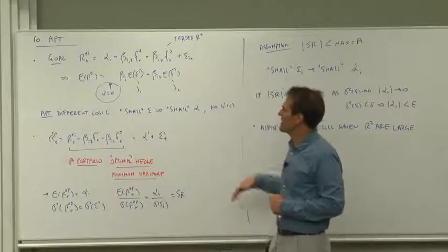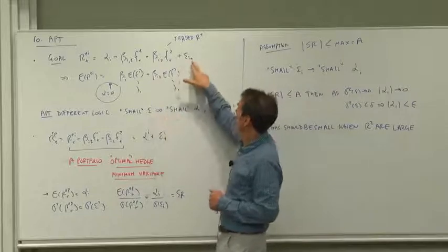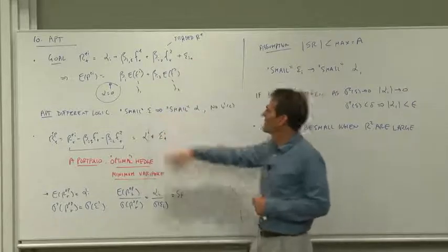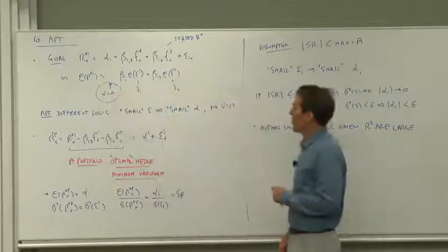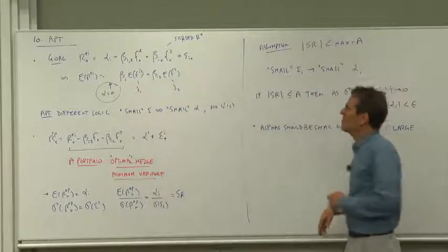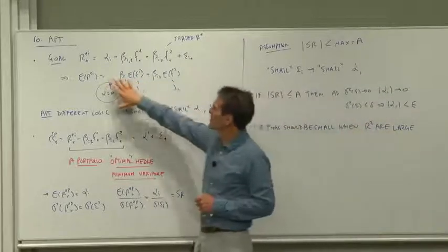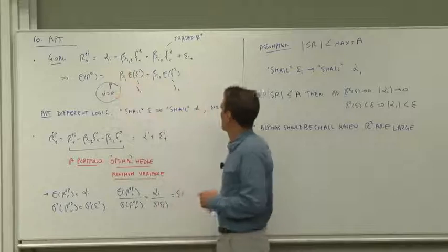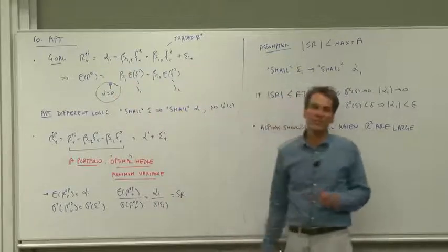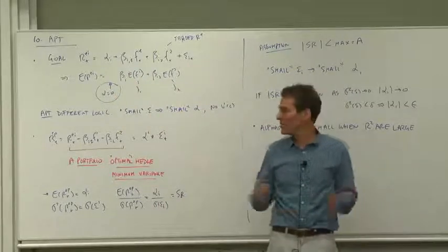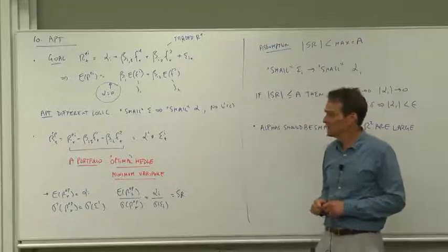The idea of the APT is that if these residuals are small, then the alphas should be small. We're not going to prove alpha zero, but we're going to find some logic under which the alphas will be small without using utility functions, consumption growth, or anything else. Here we go.